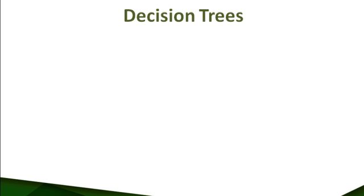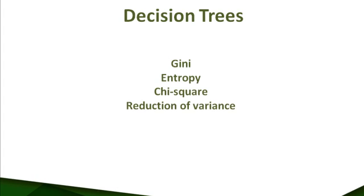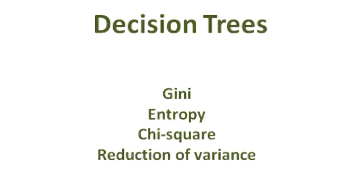This is where decision trees come in. There are various decision tree algorithms that allow the analyst to choose the right variable from thousands of available variables and split the variable at the most optimal value. In the following slides, we will learn more about the decision tree technique and the various algorithms underlying this technique.